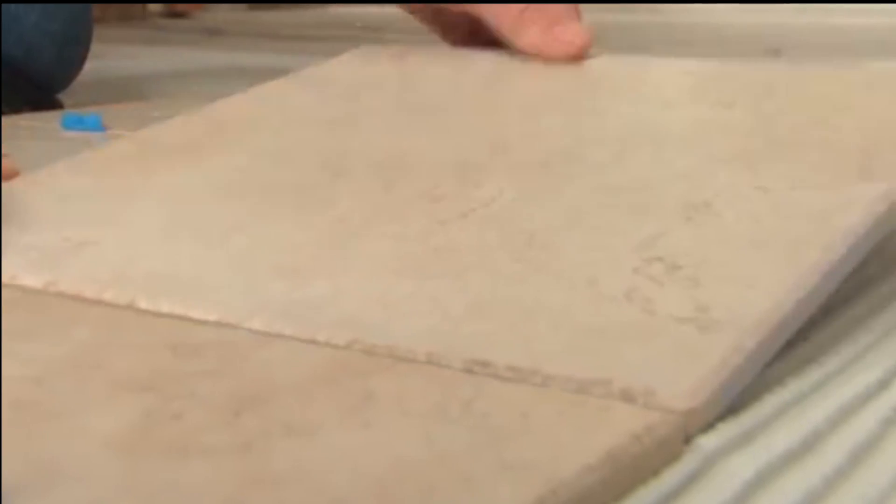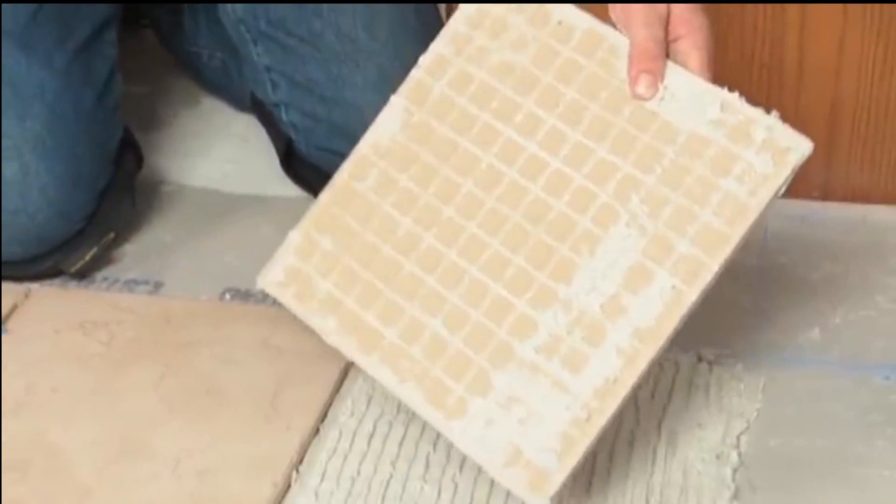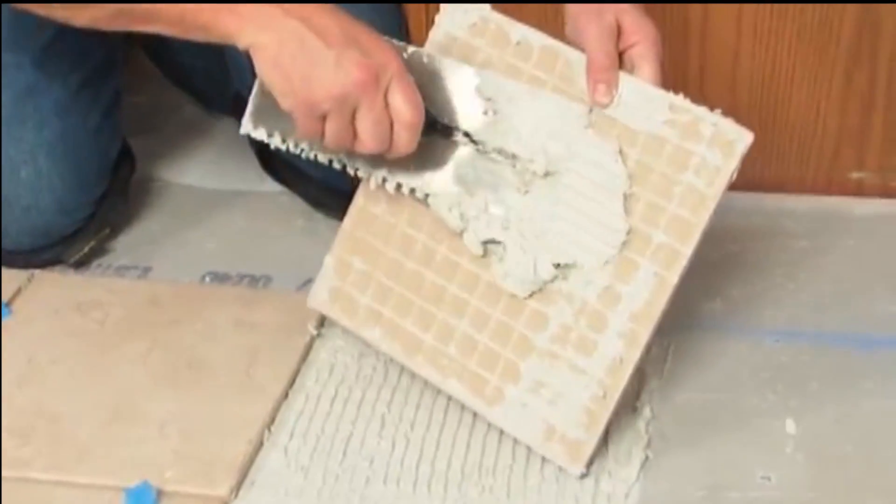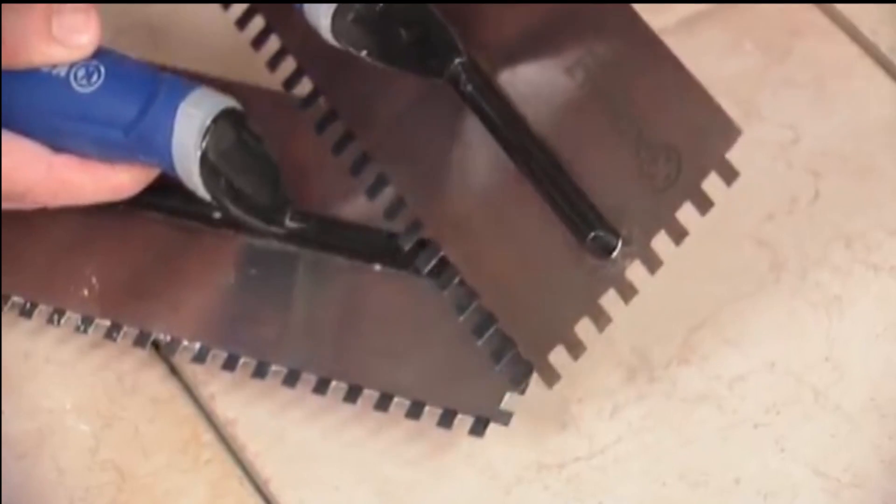Keep laying the tile. Periodically lift one to make sure the mortar is sticking. Where it isn't, you can apply additional thin-set to the back of the tile. If you're not getting good adhesion, use a trowel with larger notches. Any mortar on the face of the tiles can be wiped away with a damp sponge.